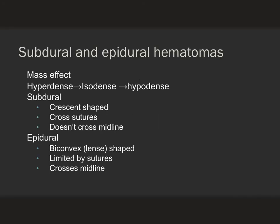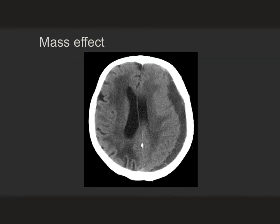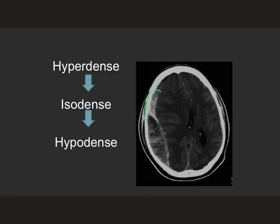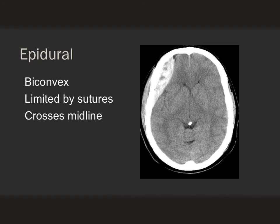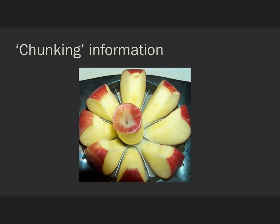Here's an illustration. This is a pretty simple slide about intracranial hemorrhage, but when you look at it, each item is an individual learning point and these should be separated out. You might start by talking about mass effect on one slide, then how intracranial blood changes with time, then the key features of a subdural hematoma, and then the key features of an epidural hematoma. What you're doing here is helping your learners chunk information together, which is a very important way of storing information and being able to retrieve it later.